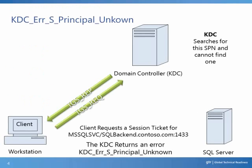Let's take a look at some of the common errors you would see with missing SPNs. In this example, a client requests a session for MSSQL/SQLbackend.contoso.com:1433. The KDC searches for this SPN and cannot find one. It returns a response back to the client with an error KDC_ERR_S_PRINCIPAL_UNKNOWN.